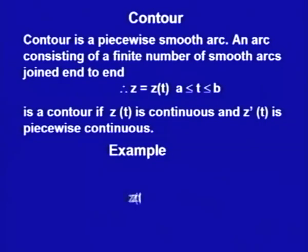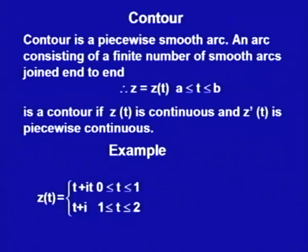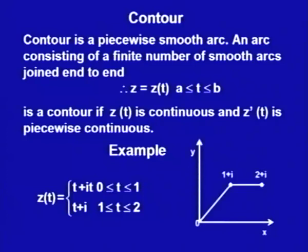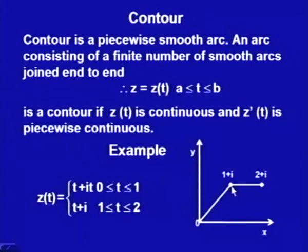For example, take z(t) defined as t + it for t in [0,1] and t + i for t in [1,2]. The first piece, t + it, is the straight line from 0 to 1+i, and then we have the straight line from 1+i to 2+i. So we have two arcs joined end to end. These functions are continuous and differentiable, so taking the derivative we get 1+i on the first piece and 1 on the second piece.